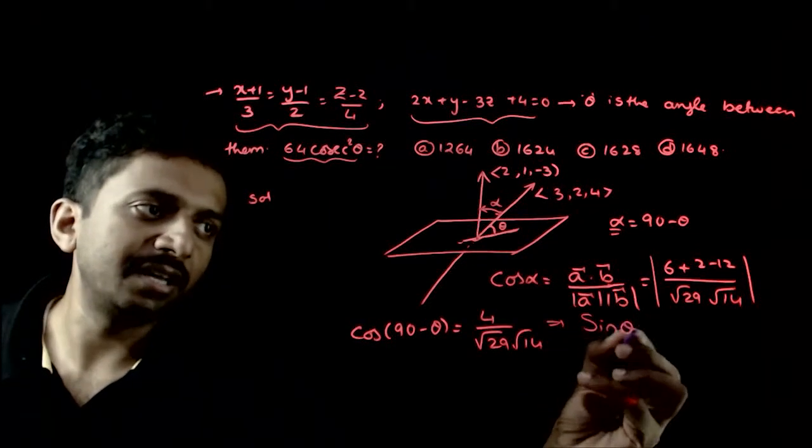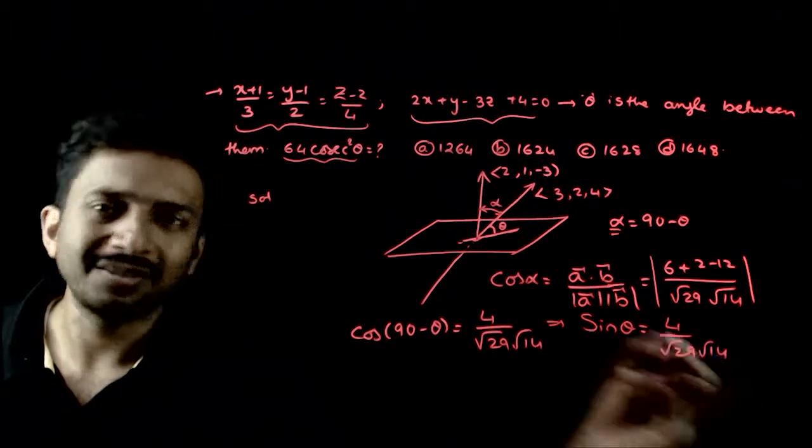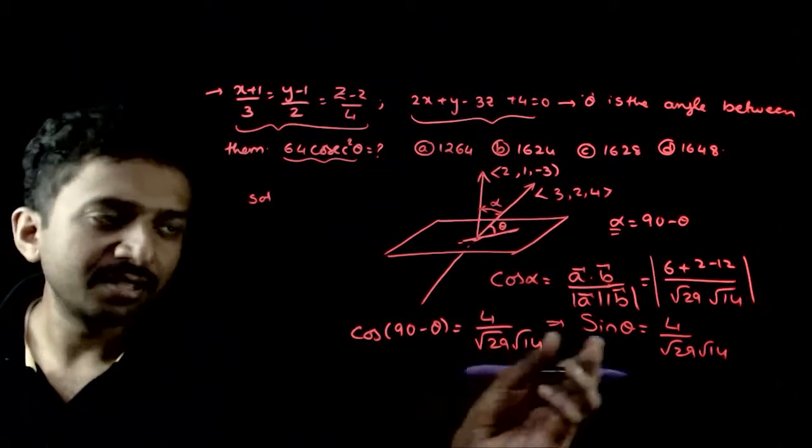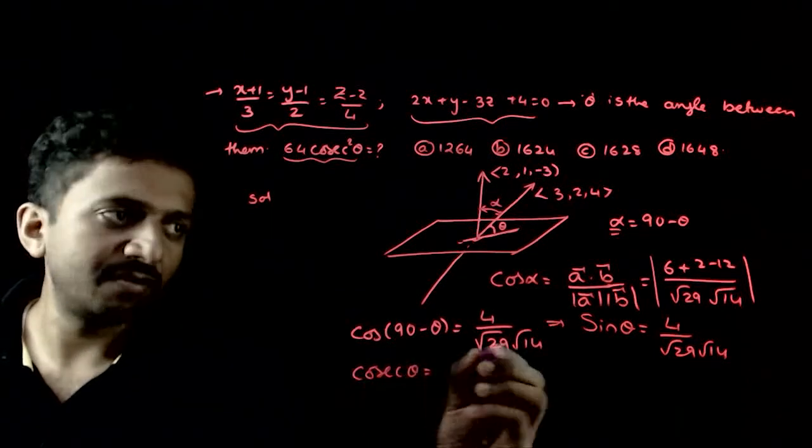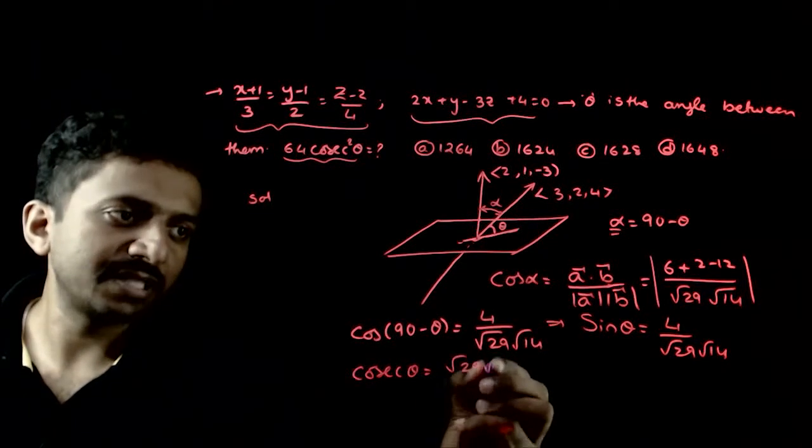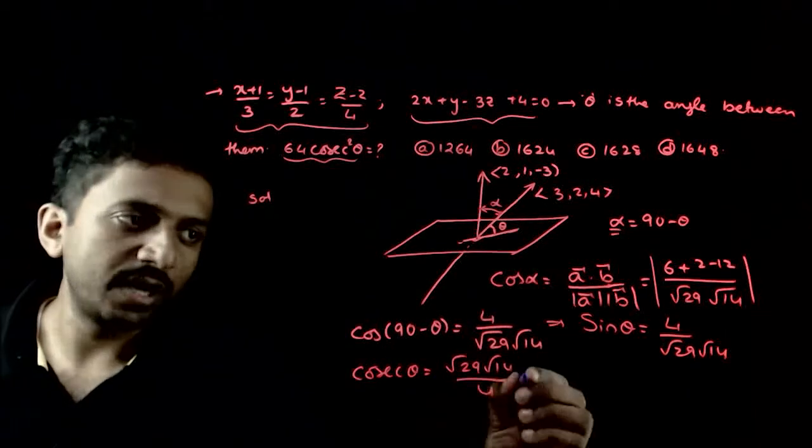Sin theta is equal to 4 by root 29 into root 14. So, cosecant theta kya ho ga? Cosecant theta is equal to reverse of sin theta by 4. So, cosecant square theta kya ho ga?